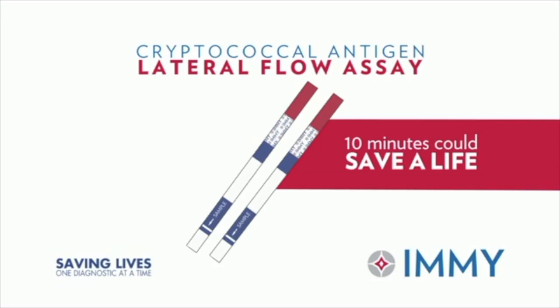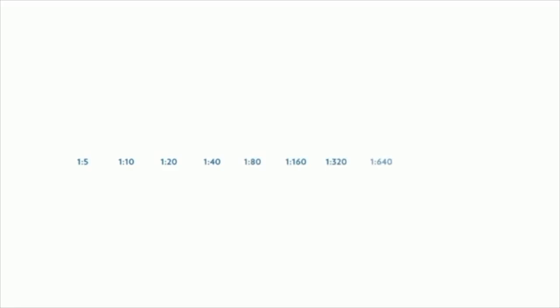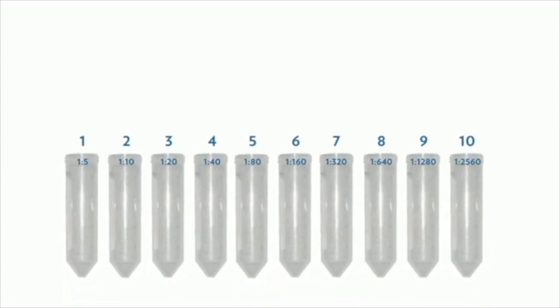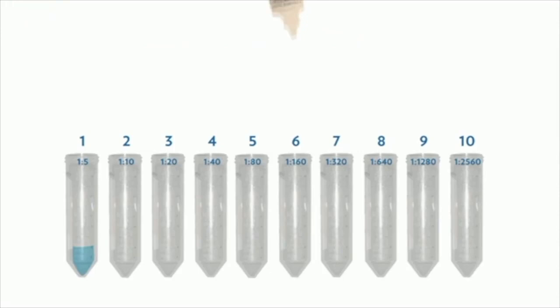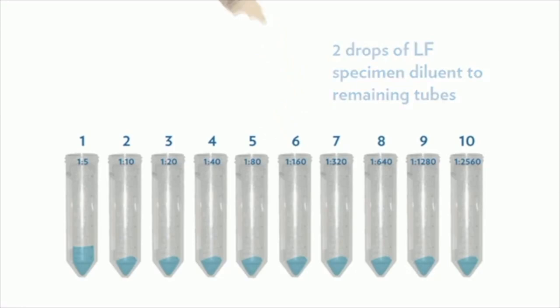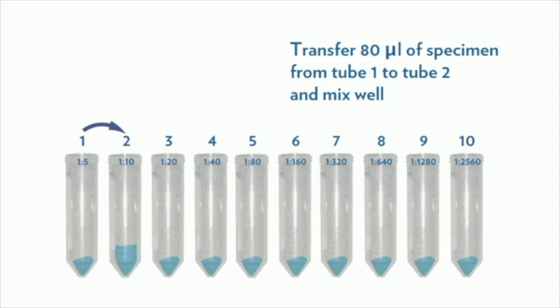Following a positive result, the semi-quantitative procedure can be run to determine the titer of the specimen. Prepare dilutions starting with an initial dilution of 1 to 5 and follow with two-fold serial dilutions up to 1 to 2560. Place 10 micro-centrifuge or test tubes in an appropriate rack and label them one to ten. Add four drops of lateral flow specimen diluent to tube number one, add two drops of specimen diluent to each of the tubes labeled two through ten, add 40 microliters of specimen to tube one and mix well, then transfer 80 microliters from tube one to tube two and mix well. Continue this dilution procedure through tube number ten.